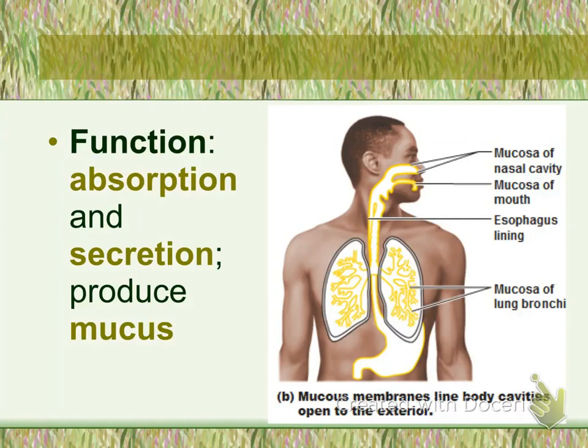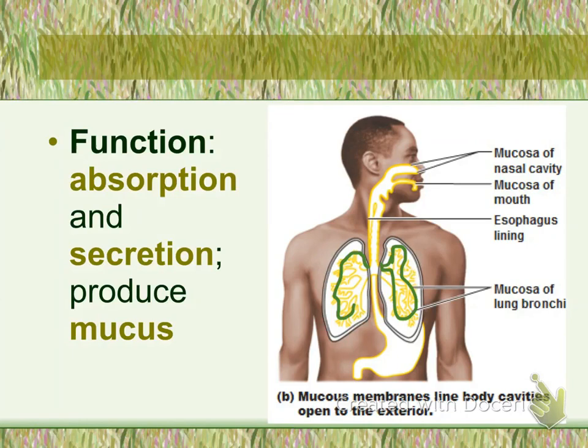The function of the mucous membrane is for absorption, but the main function is the production and secretion of mucus. Mucus is the fluid that comes out of your nasal cavity when you blow your nose — it is slimy and sticky, good for trapping foreign particles. On the right, you can see the location of the mucous membrane in two areas: the lining of the digestive tract and the lining of the respiratory tract.